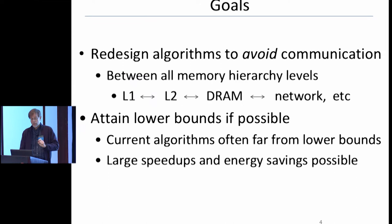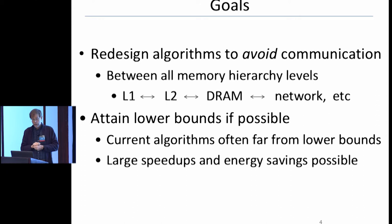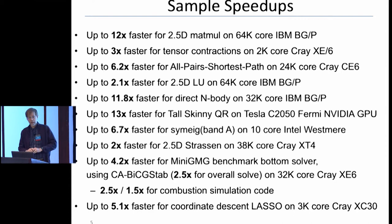My goals today: I want to redesign algorithms to avoid communication between all different levels of the memory hierarchy — between L2 and DRAM, and over the network. Whenever possible, I want to attain provable lower bounds. I'll show that current versions of very standard things, even matrix multiply, are often far above the lower bounds, and that large speedups and energy savings are possible.